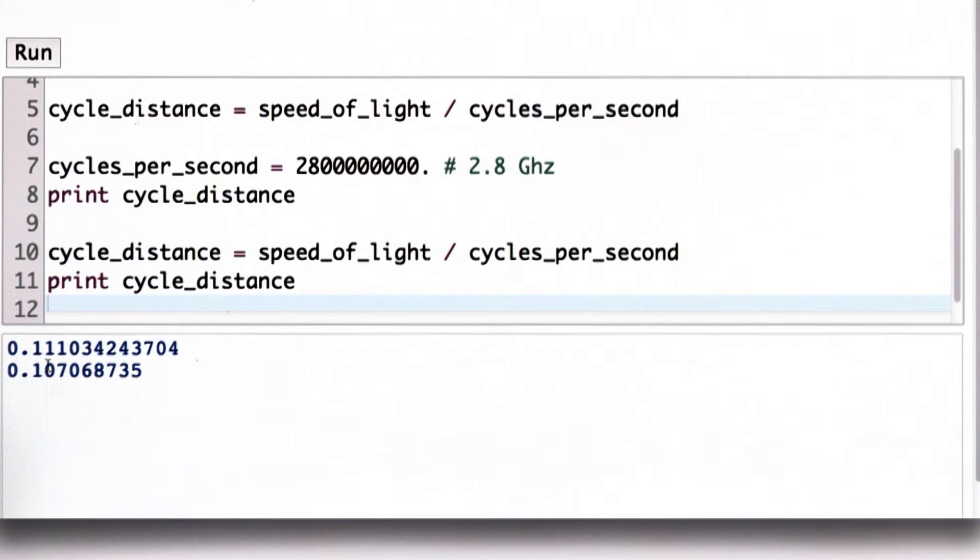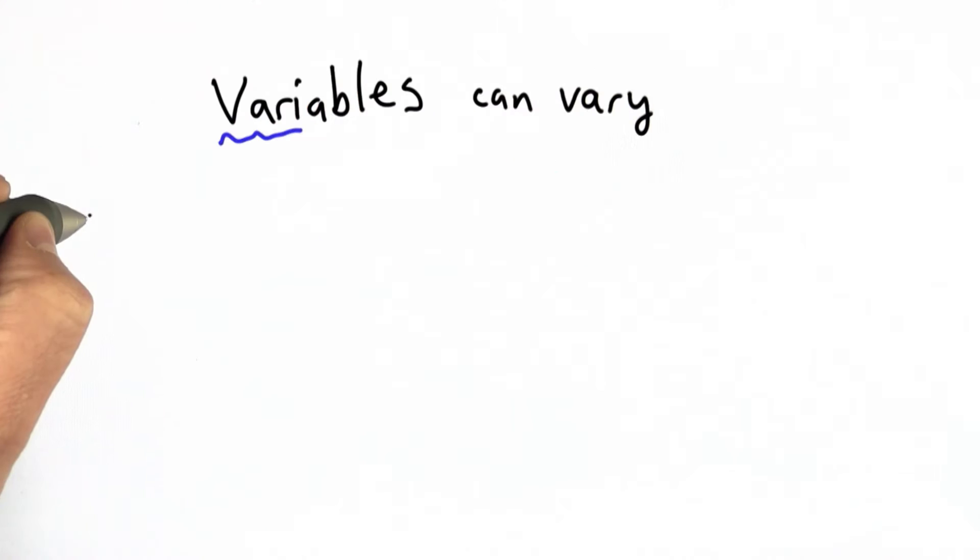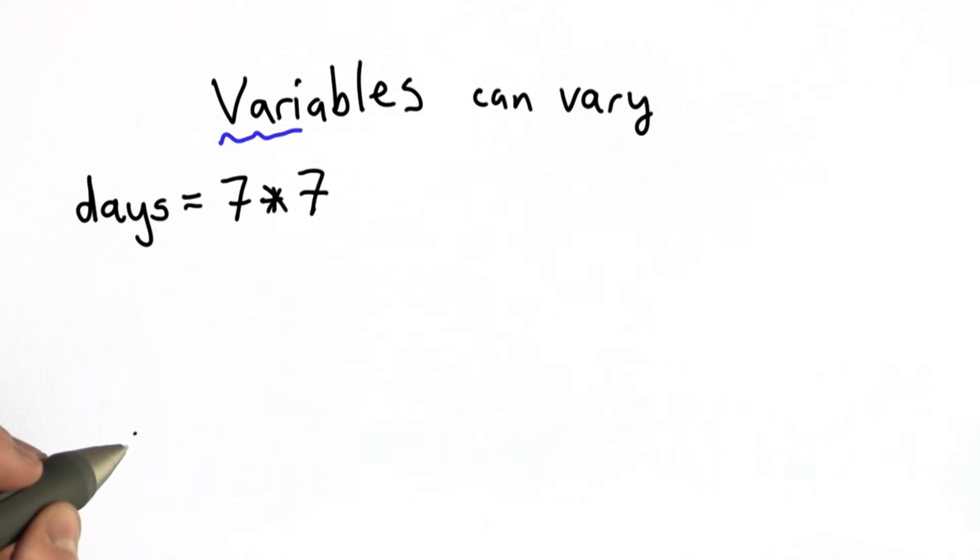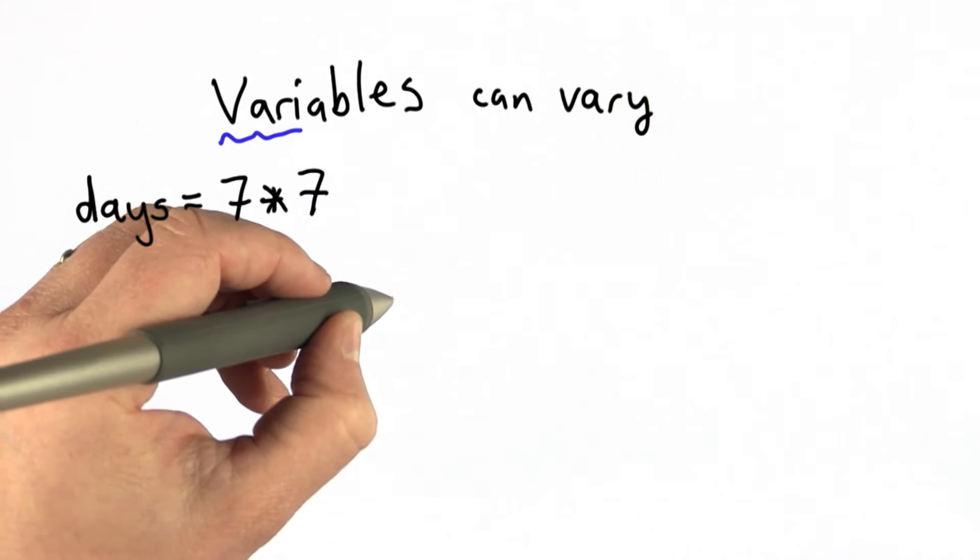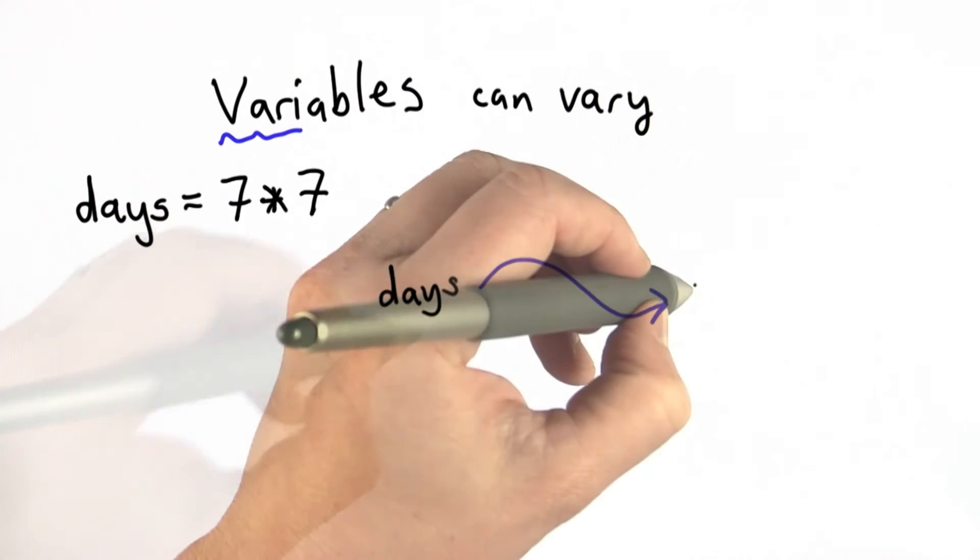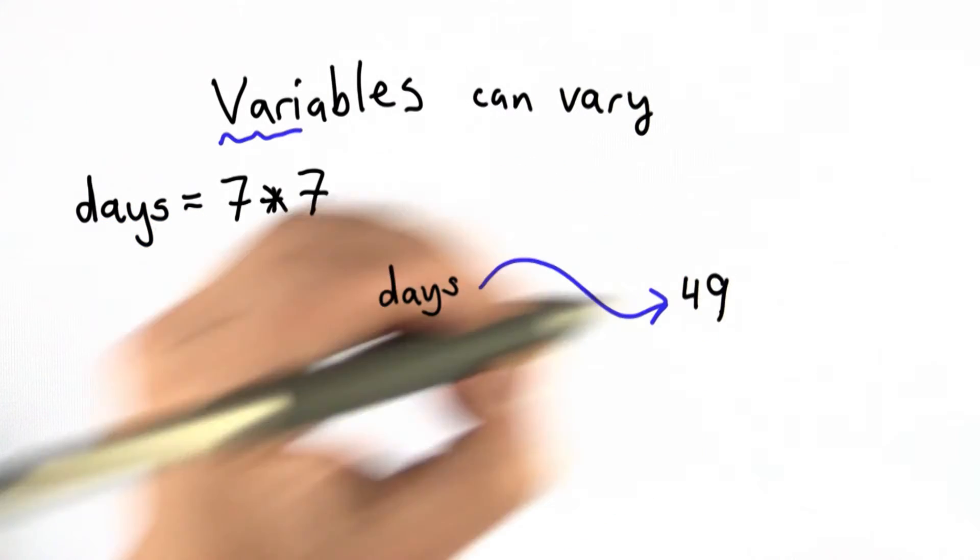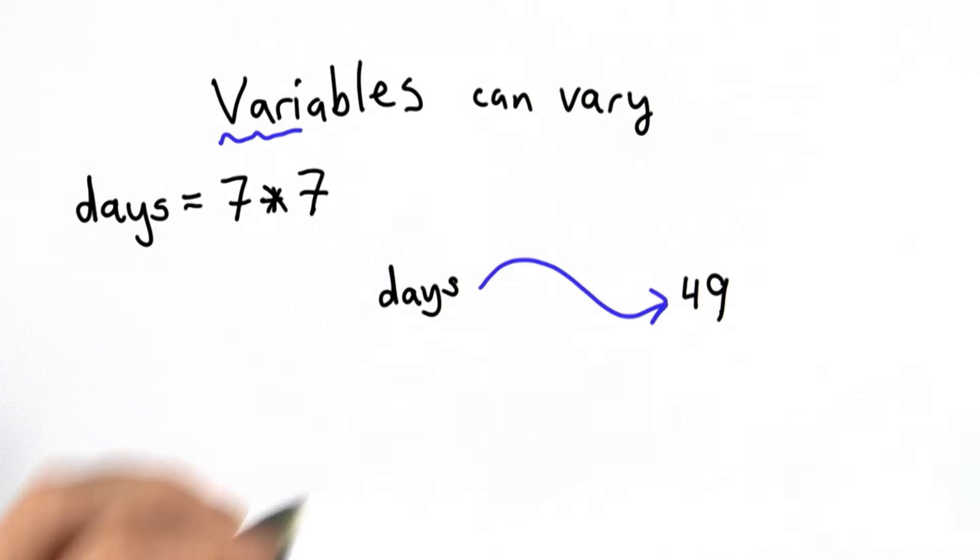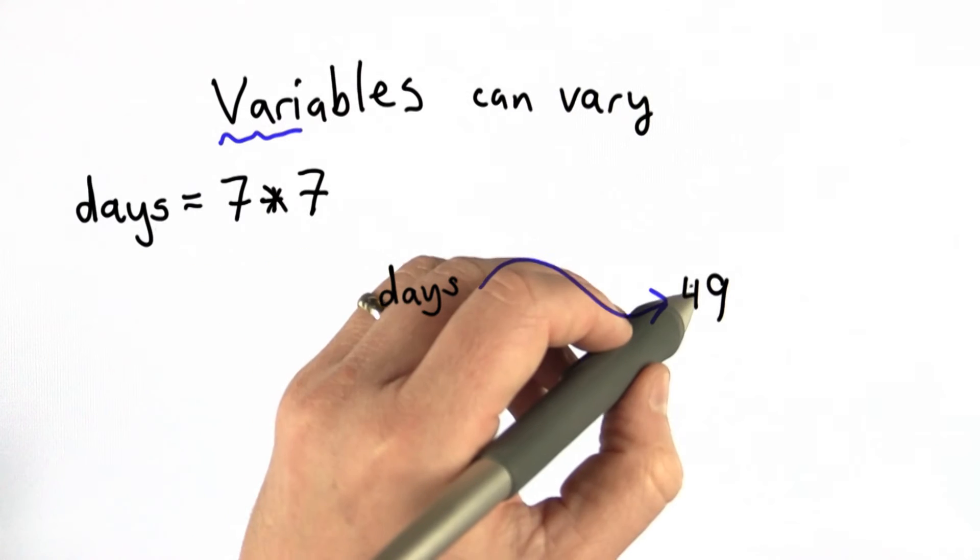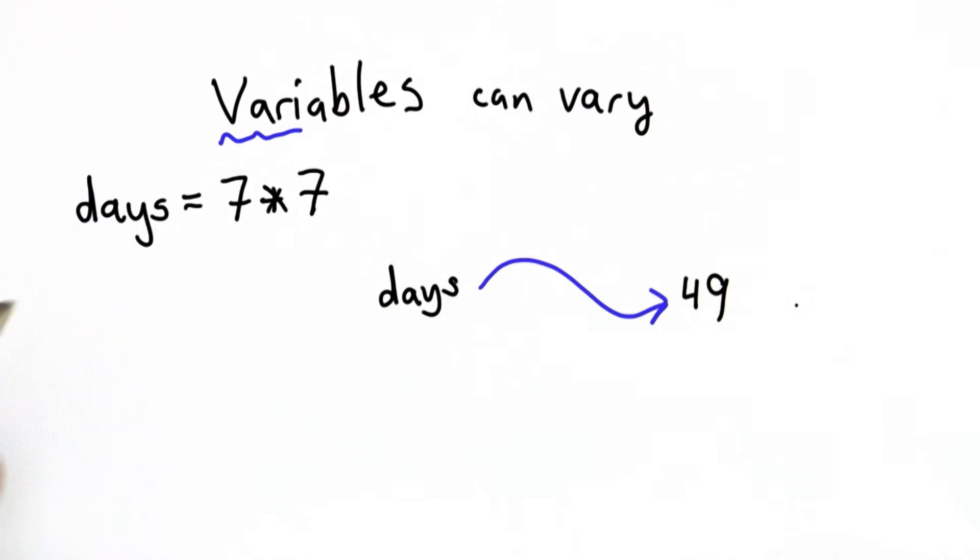So let's see what's going on there and make sure we understand assignment. Suppose we have a variable days, and we'll initialize it to the value 7 times 7. So what that does is introduce a name days, and it refers to a value, which is the result of that expression, so it refers to the value 49. And that means when we look up the name days, we see what it refers to, and we get the result 49.